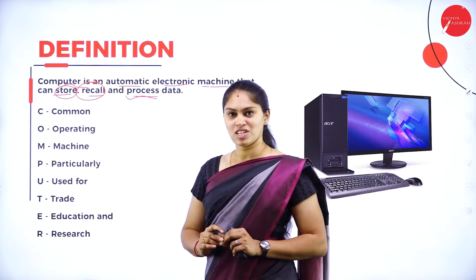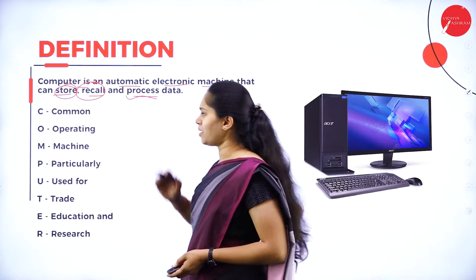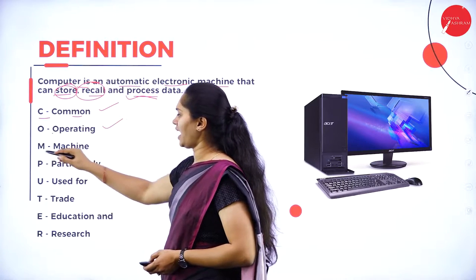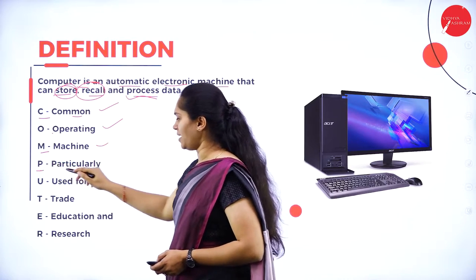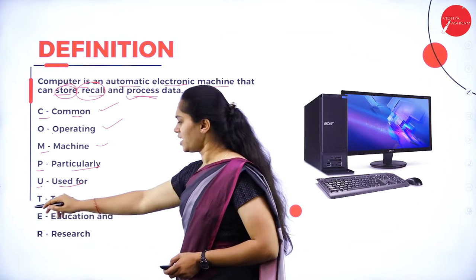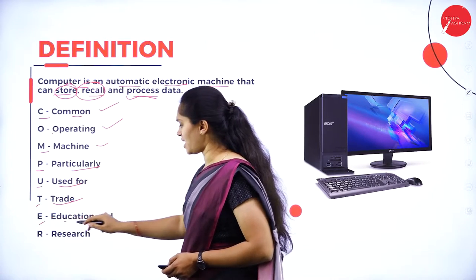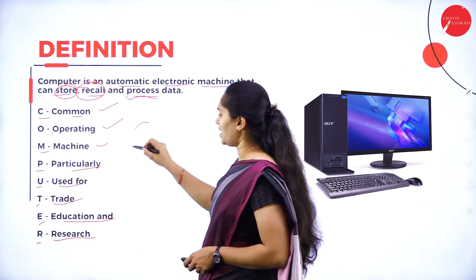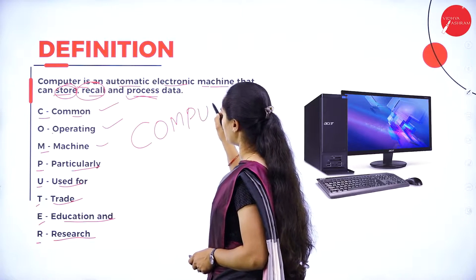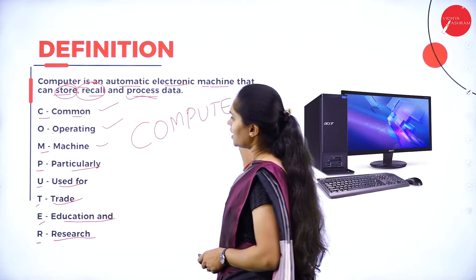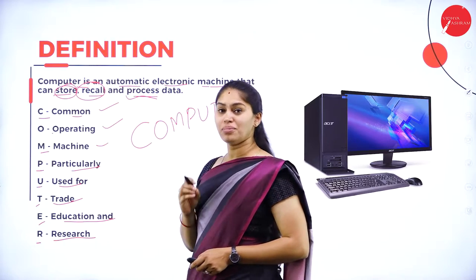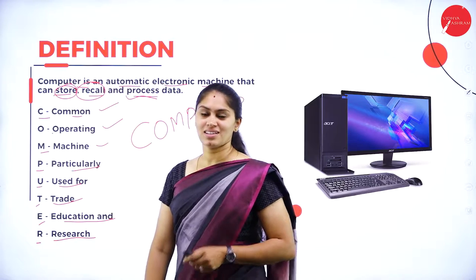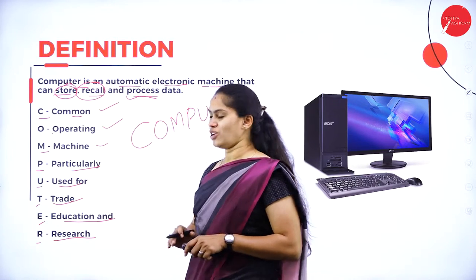Do we know the abbreviation of the word computer? C stands for Common, O stands for Operating, M stands for Machine, P stands for Particularly, U stands for Used for, T stands for Trade, E stands for Education, and R stands for Research. So computer stands for Common Operating Machine Particularly Used for Trade, Education, and Research.